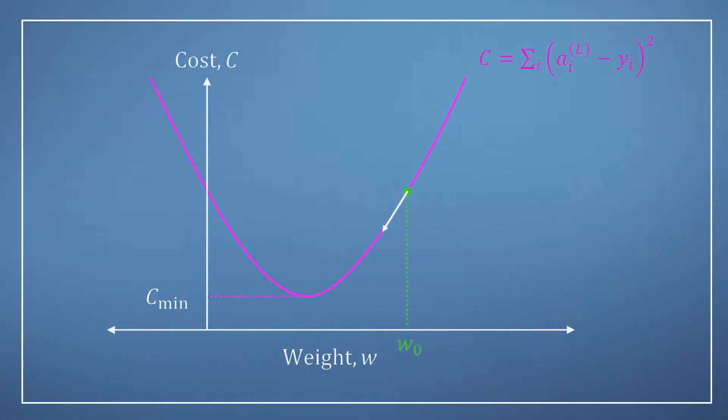For example at the point shown on the graph the gradient is positive and therefore increasing w would also increase the cost, so we should make w smaller to improve our network.